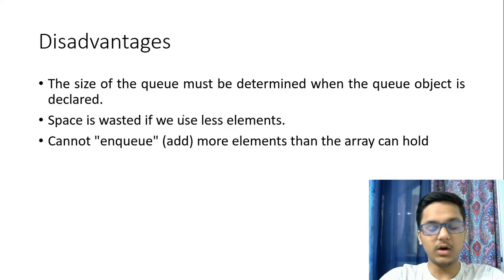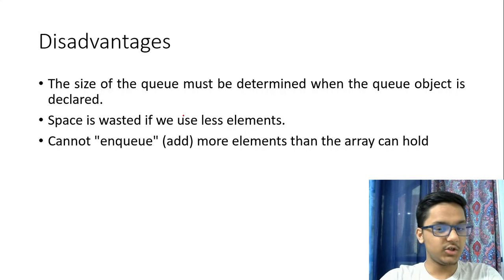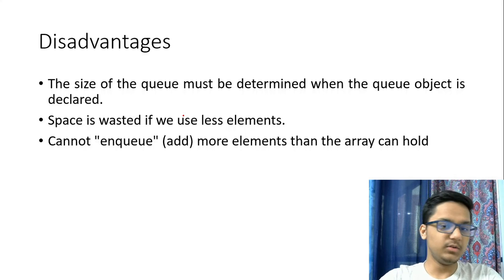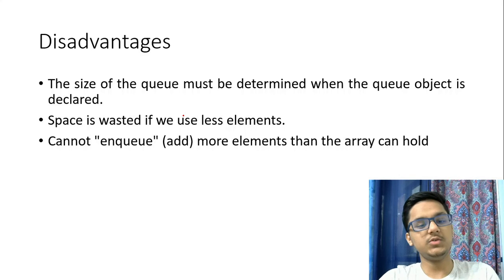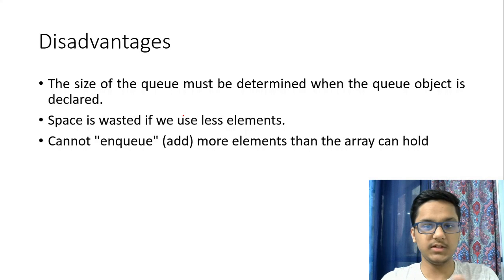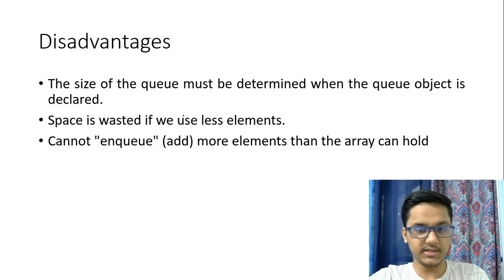Now let's look at some more disadvantages of queues. Like arrays, the size of a queue is fixed and cannot be changed. Space is also wasted if you use fewer elements, or if you delete an element — once deleted from the zeroth index, you can't add back there. To solve the disadvantage of memory wastage, two new types of queues have been invented: circular queues and double-ended queues, also known as deques. These will be covered in a later video, and they overcome the disadvantages of a normal queue — which is why it's important to know those disadvantages.